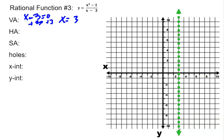In order to find the slant asymptote, I need to do long division. You can either use long division or synthetic division — I'm going to use synthetic division.